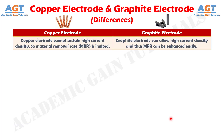Number 6: copper electrode cannot sustain high current density, so material removal rate is limited. Whereas, graphite electrode can allow high current density and thus MRR can be enhanced easily.